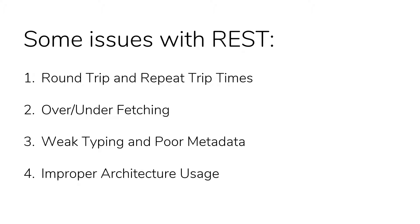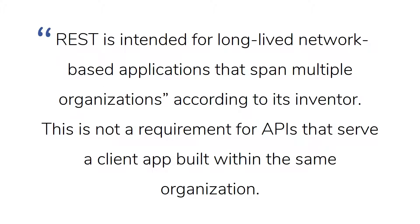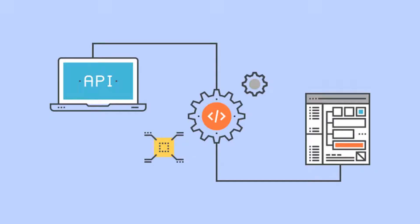Improper architecture usage: REST suffers from the fact that it's often used for something it wasn't really designed for, and as a result, it often must be heavily modified. That's not to say that REST doesn't have its place — it's only to say that it may not be the best solution for serving client applications, as Facebook says in its own documentation. REST is intended for long-lived network-based applications that span multiple organizations according to its inventor. This is not a requirement for APIs that serve a client app built within the same organization. All of this is to say that GraphQL is functionally the end of REST, but not in the way that terminology implies. Until now, REST has been seen as the foundational architecture of modern APIs, and in a way, the last bastion of classic API design. The argument here is not made to fully sever REST from our architectural lexicon, but instead to acknowledge that there are several significant issues that are not properly and fully rectified by the solutions often proffered by its proponents.